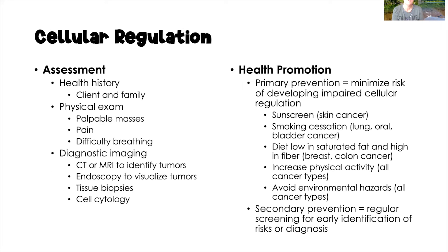For assessment, we need a good health history on both the client and the family. From a physical examination standpoint, we want to palpate any masses, assess for pain in various parts of the body, and determine if the client is having difficulty breathing, which could indicate a malignant or benign growth in the chest or lung. To completely diagnose a benign or malignant growth, we use CAT scans or MRIs to identify tumor locations. Endoscopy can also be used to visualize tumors and take tissue biopsies, which are sent to the lab for cell cytology to help grade and stage tumors.